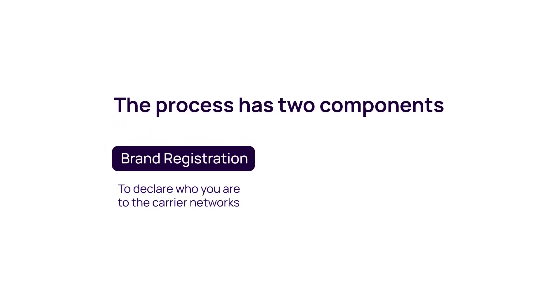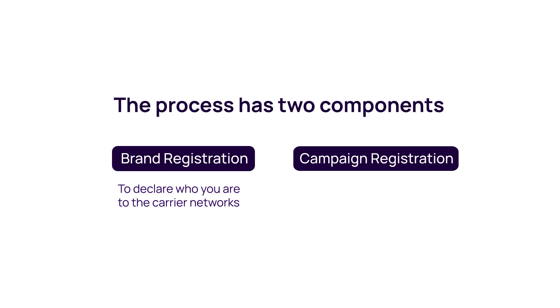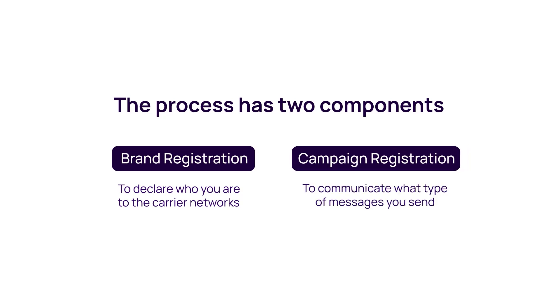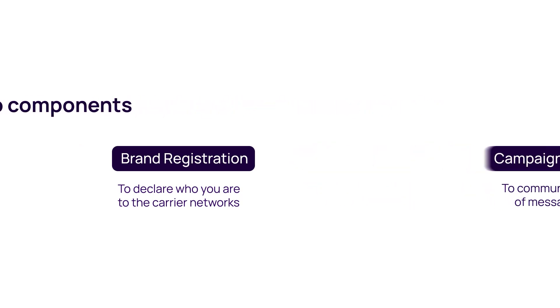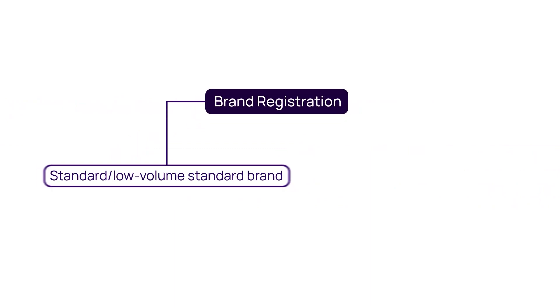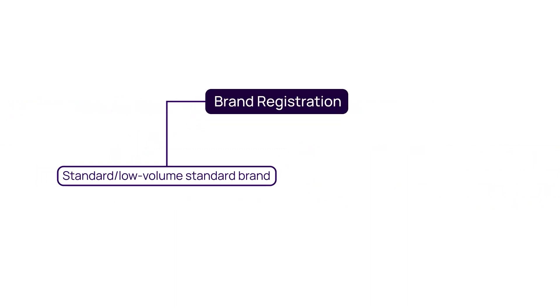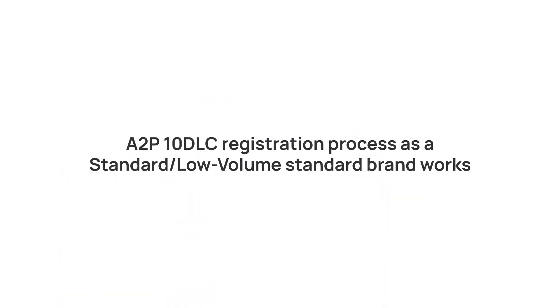The registration process has two components: brand registration, to declare who you are to the carrier networks, and campaign registration, to communicate what type of messages you send. Brand registration is categorized into Standard, Low Volume Standard, or Sole Proprietor.